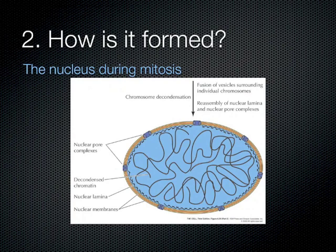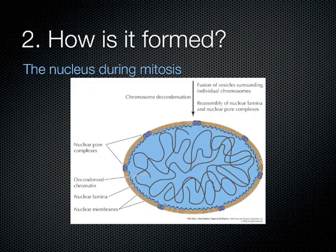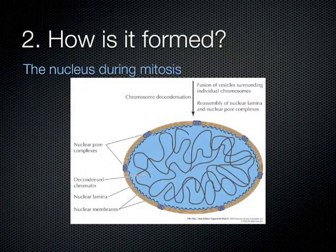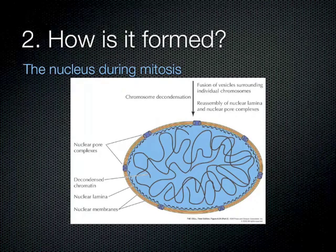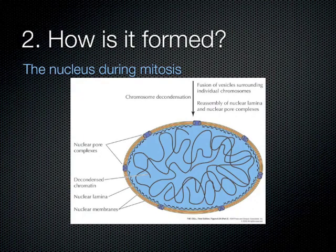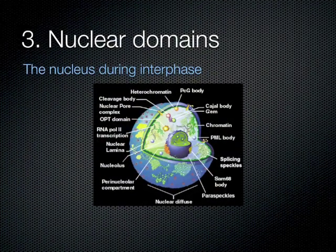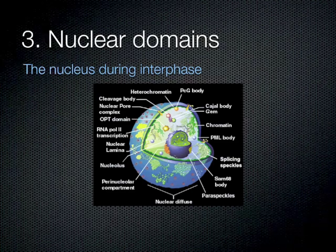So the nucleus is formed by vesicle fusion — specifically the vesicles produced when the nuclear envelope disintegrated during mitosis. The key players of the whole process are the lamins. At this stage, the lamins are not phosphorylated, allowing them to form the polymers that create the scaffolding structure giving shape to the nuclear envelope.